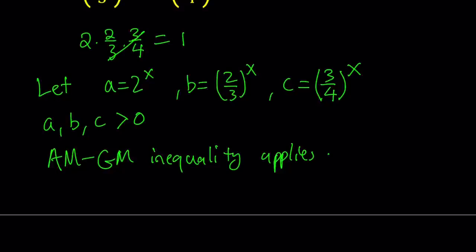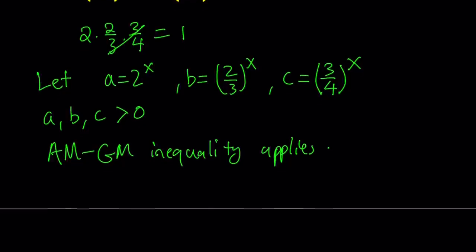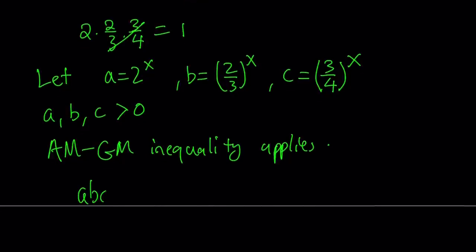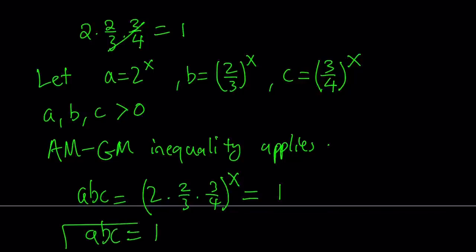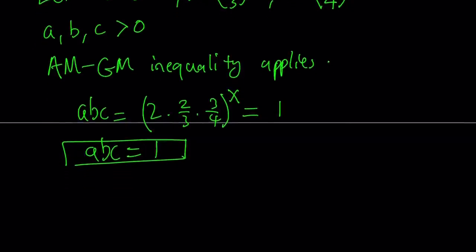Now also notice that if you multiply a, b, c together you're going to get 2 times 2 thirds times 3 fourths to the power x, which is equal to 1 to the power x, which is equal to 1. So we have the product a, b, c equal to 1, and a, b, c are all positive, therefore we can use AM-GM inequality.